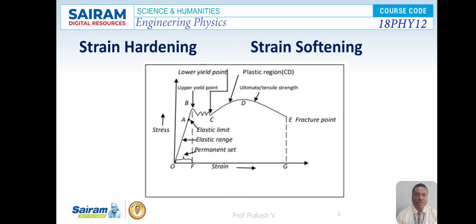Here we can look at a graph plotted — stress versus strain for an elastic material. Between O and A, the material is within the elastic limit. That means when you remove the deforming force, the material will come back to its original position. Beyond B, it will go to the plastic region, as the curve shows here.